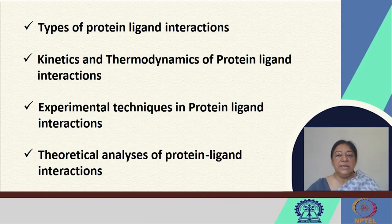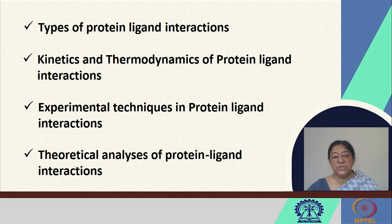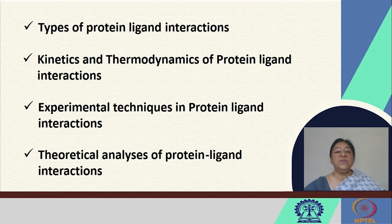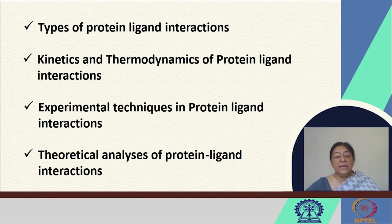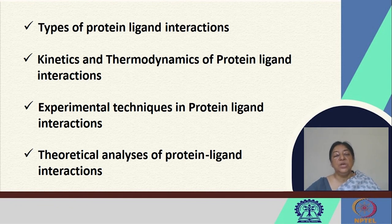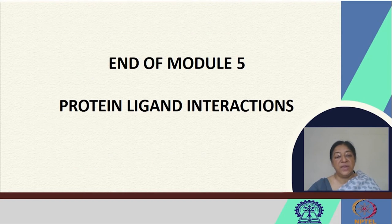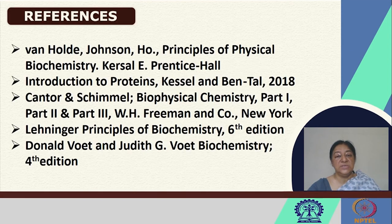In summary, this module covered the types of protein-ligand interactions, the kinetics and thermodynamics of protein-ligand interactions, experimental techniques, and theoretical analysis including docking methods. In this final lecture, we worked with equilibrium dialysis data, plotted Scatchard plots to determine the number of binding sites, and used the Hill equation and Hill plot to determine cooperativity of binding. This concludes Module 5 on protein-ligand interactions. References have been given in each lecture and are also listed here. Thank you.